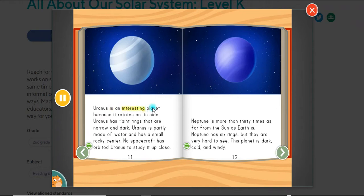Uranus is an interesting planet because it rotates on its side. Uranus has faint rings that are narrow and dark. Uranus is partly made of water and has a small rocky center. No spacecraft has orbited Uranus to study it up close.